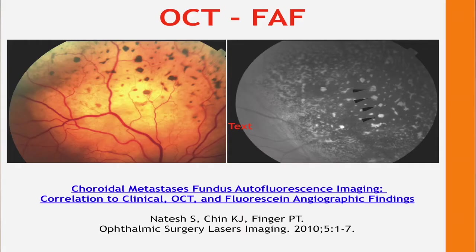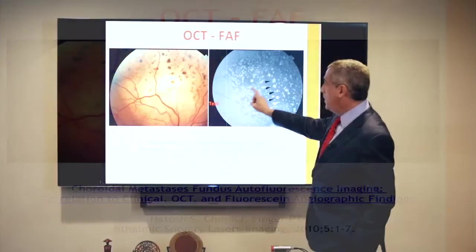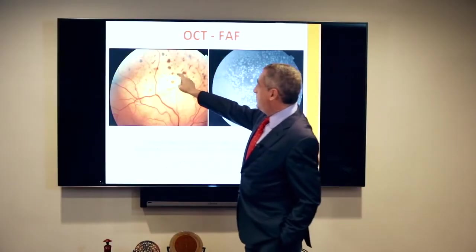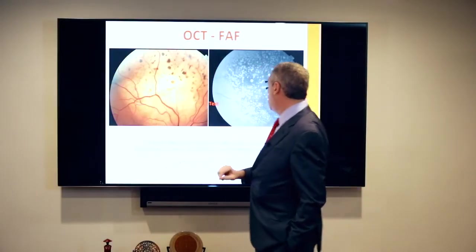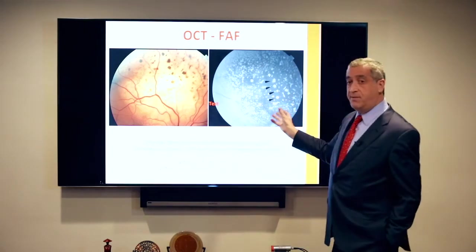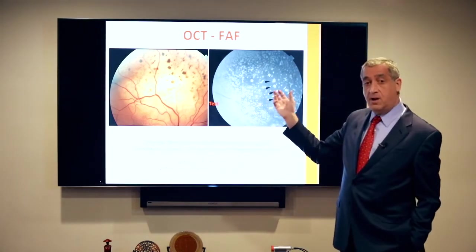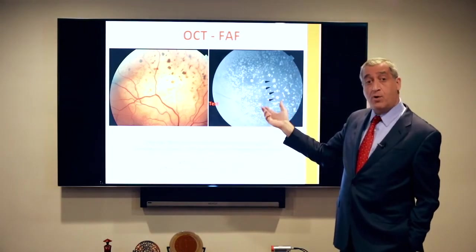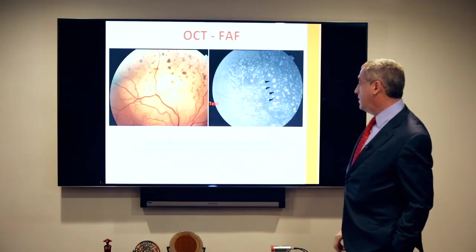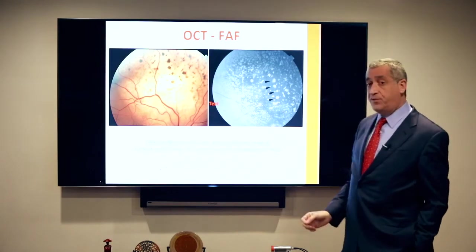One of my fellows, Dr. Natesh, looked at these particular islands of dying RPE and found that they lit up. As they evolve, they are hyper-autofluorescent and full of lipofuscin. Lipofuscin is found in many places, not just in choroidal melanomas — you have lipofuscin deposition after a heart attack in your heart muscle, and in your skin as age spots.